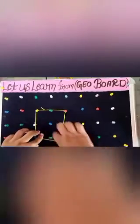Now we will discuss about the square. This is our square. A square has equal sides and each angle at the vertex is of 90 degrees. Now we can form a rectangle. A rectangle's opposite sides are equal and angles are also of 90 degrees.